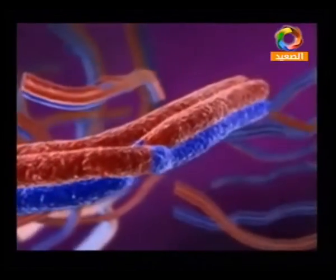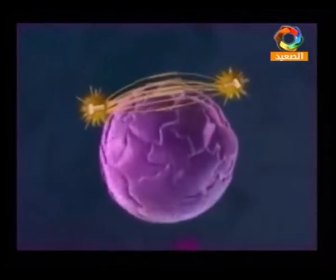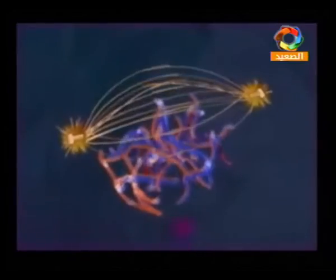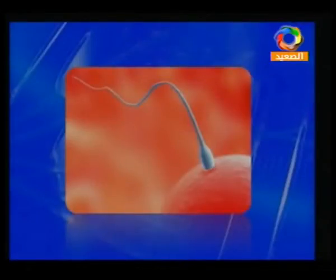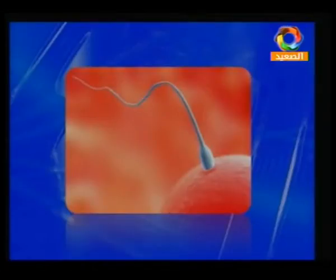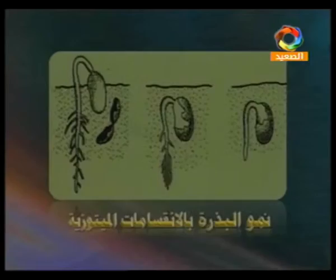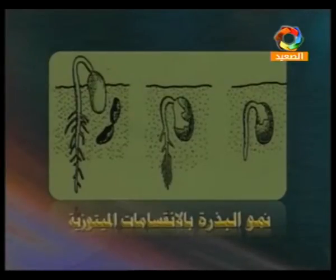Each member of a chromosome pair is called a homologous chromosome. Chromosomes are referred to using the notation N or 2N, representing haploid and diploid numbers respectively. The body uses mitosis (انقسام ميتوزي) for growth. Growth in living organisms occurs through mitotic division.